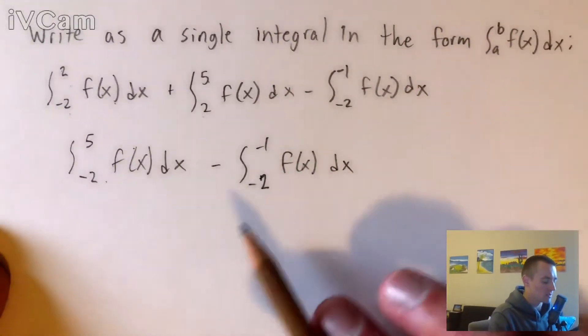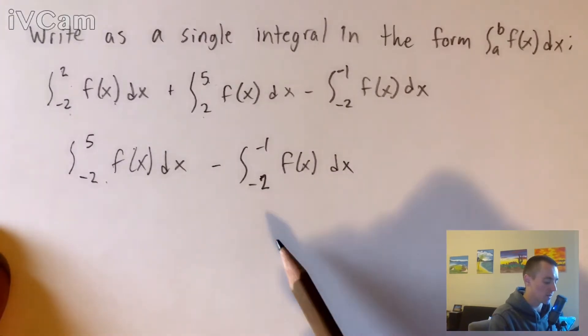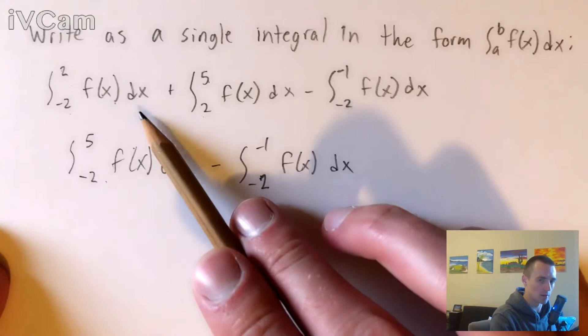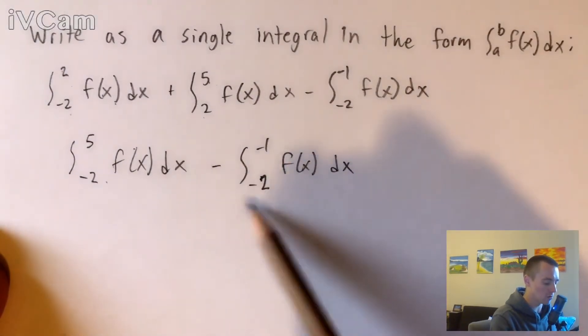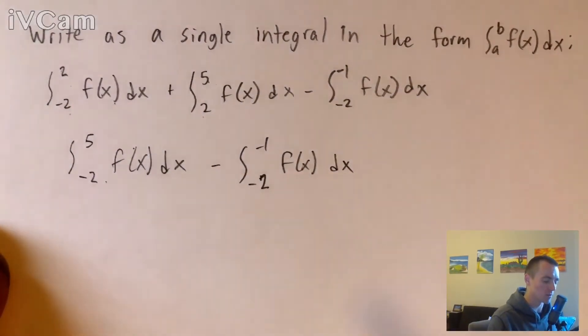Now notice, to combine these into one single integral, we can't use that same property as we did to combine these two integrals because they both have the same lower bound and different upper bound. So it doesn't quite work.